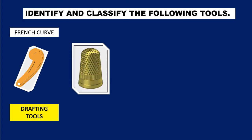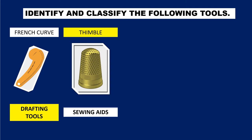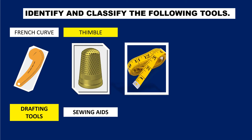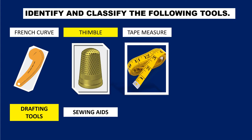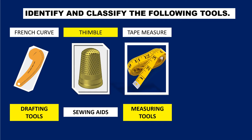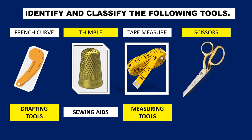Next picture is what we call a thimble. Thimble is classified as sewing aids. The next picture is what we call the tape measure. Tape measure is classified as measuring tools. The next picture is scissors. Scissors is an example of cutting tools.